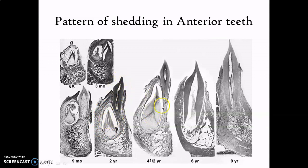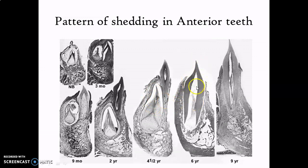As the permanent tooth germ grows, it exerts pressure on the lingual side of the root of the primary predecessor tooth. This pressure will cause resorption of the root starting from the lingual aspect. As resorption continues and is two-thirds complete, the primary tooth will lose its support in the socket and it will be shed off or exfoliated. After exfoliation, the permanent tooth germ erupts into the position.